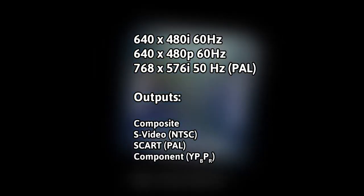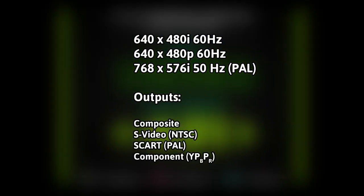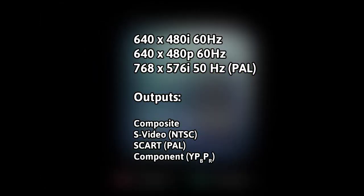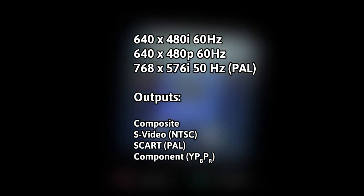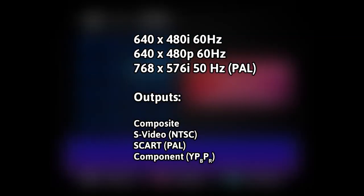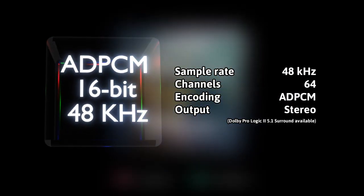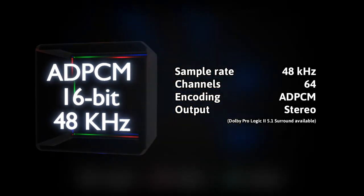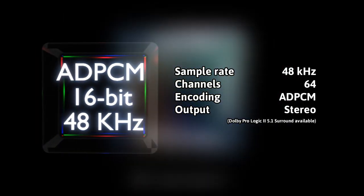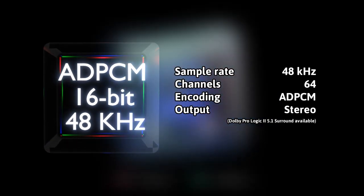The GameCube's video output is standard definition at 640x480 and its PAL equivalent, with progressive scan capability. Video outputs include S-Video, Component, and Composite Video. Regarding the audio capabilities of the console, the audio processor supports 16-bit, 48kHz sample rate audio encoded as ADPCM.